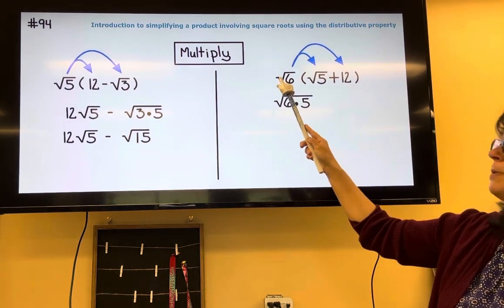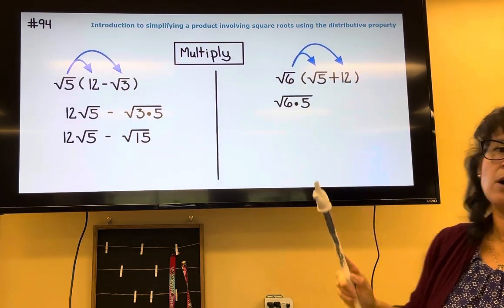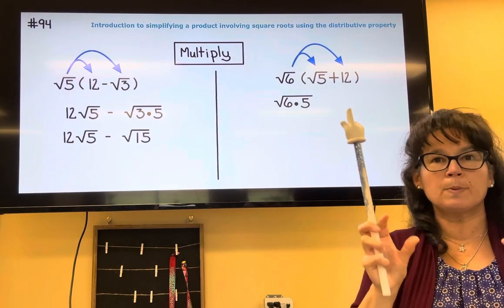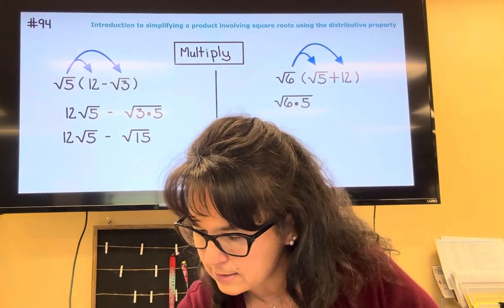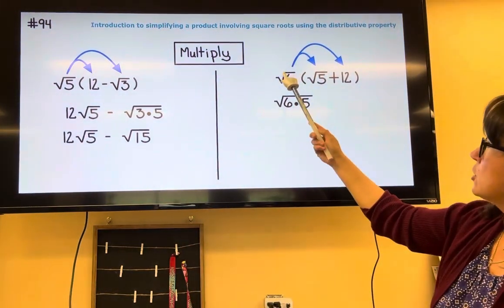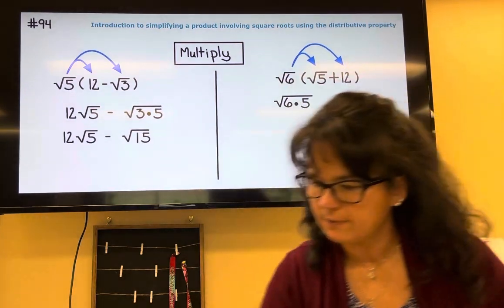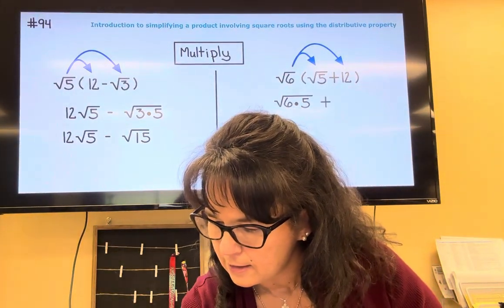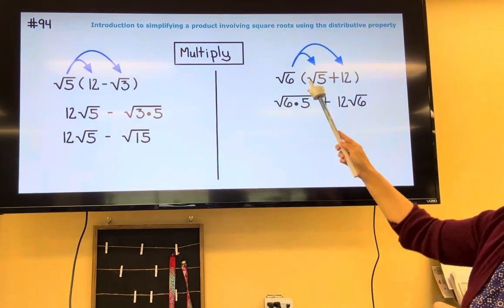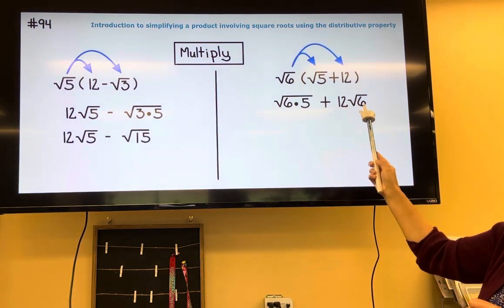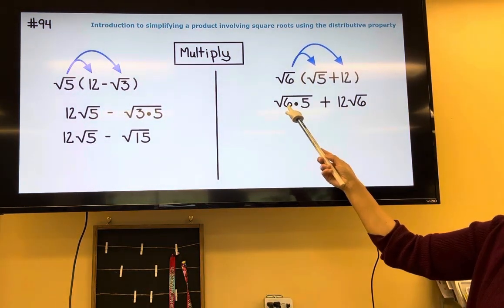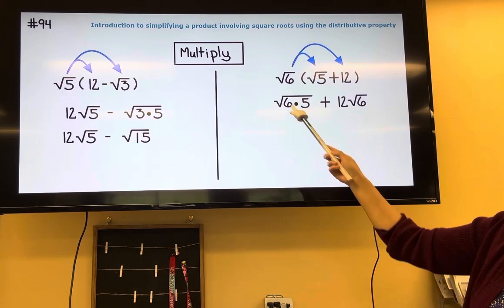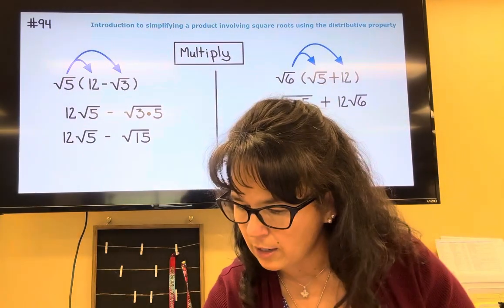But when I multiply the square root of 6 times 12, to show the multiplication, we're just gonna put those side by side. Positive times positive is positive, and then root 6 times 12 is 12 roots of 6. I can go ahead and multiply the 6 and 5, so this turns into the square root of 30.